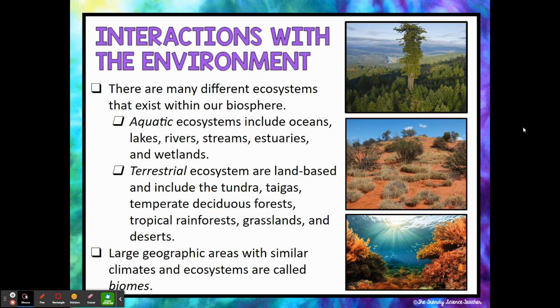We have different ecosystems that can exist within the biosphere. You can have aquatic ecosystems — these are our water ecosystems and they include oceans, lakes, rivers, wetlands, and estuaries. Then your terrestrial ecosystems are land-based and these include the tundra, taiga, rainforest, grasslands, and deserts. We're going to talk about a lot of different terrestrial ecosystems in this unit. Large geographic areas with similar climates and ecosystems are called biomes.